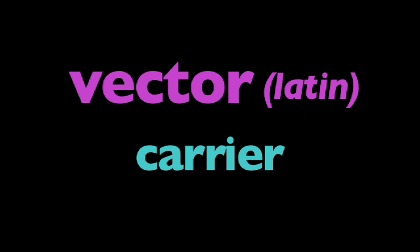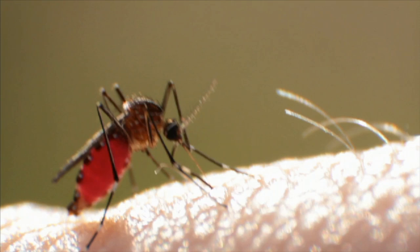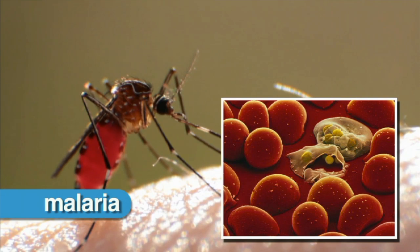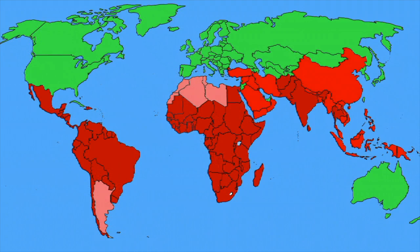A mosquito is an example of a biological vector. Some mosquitoes are vectors, or carriers, of a deadly disease called malaria. The red areas on this world map show the places where the malaria parasite is spread by infected mosquitoes.